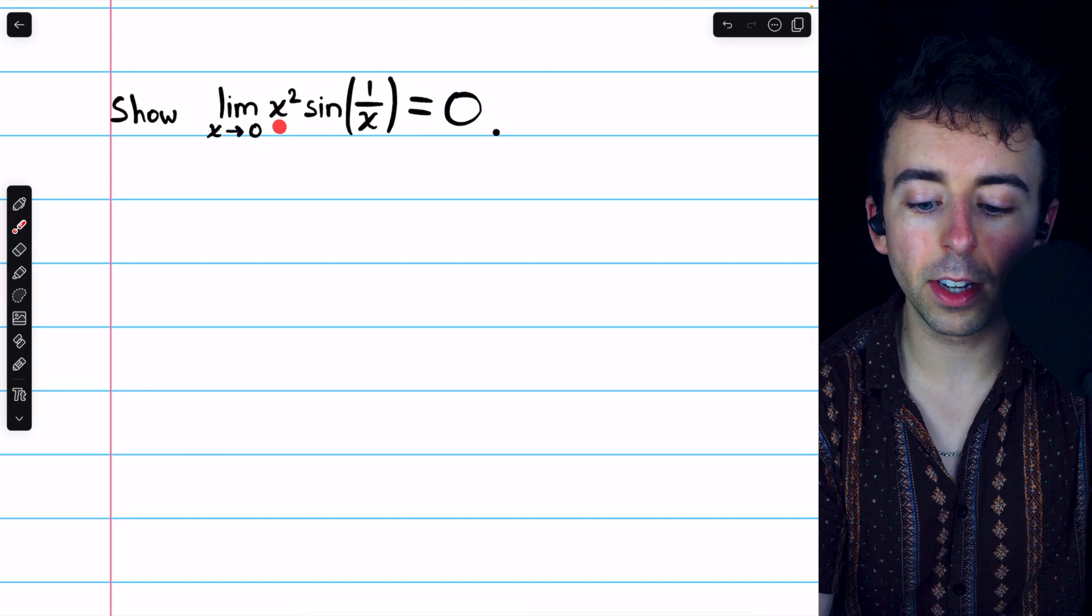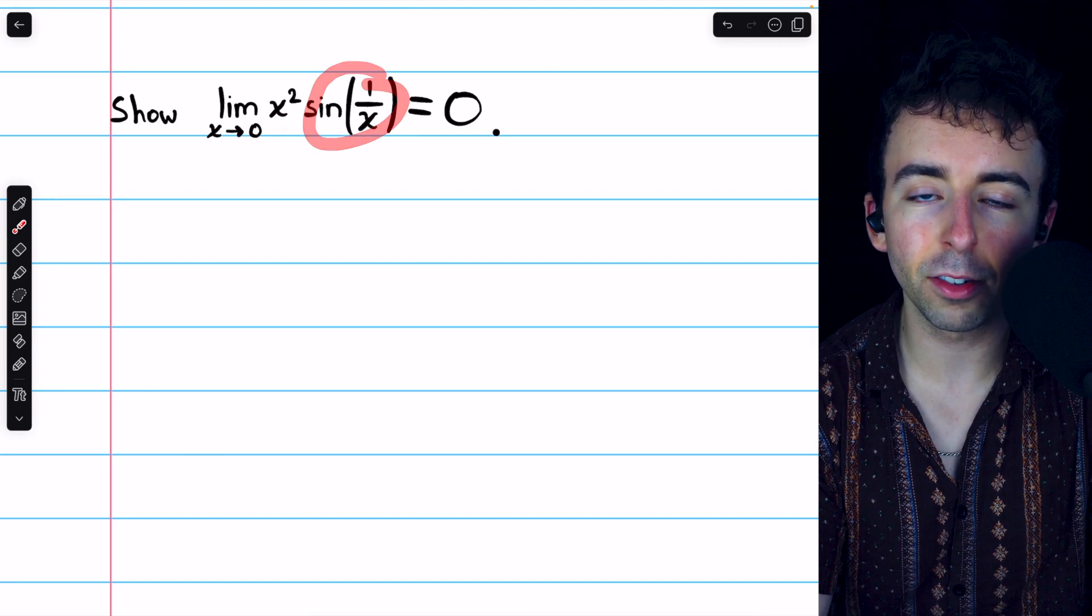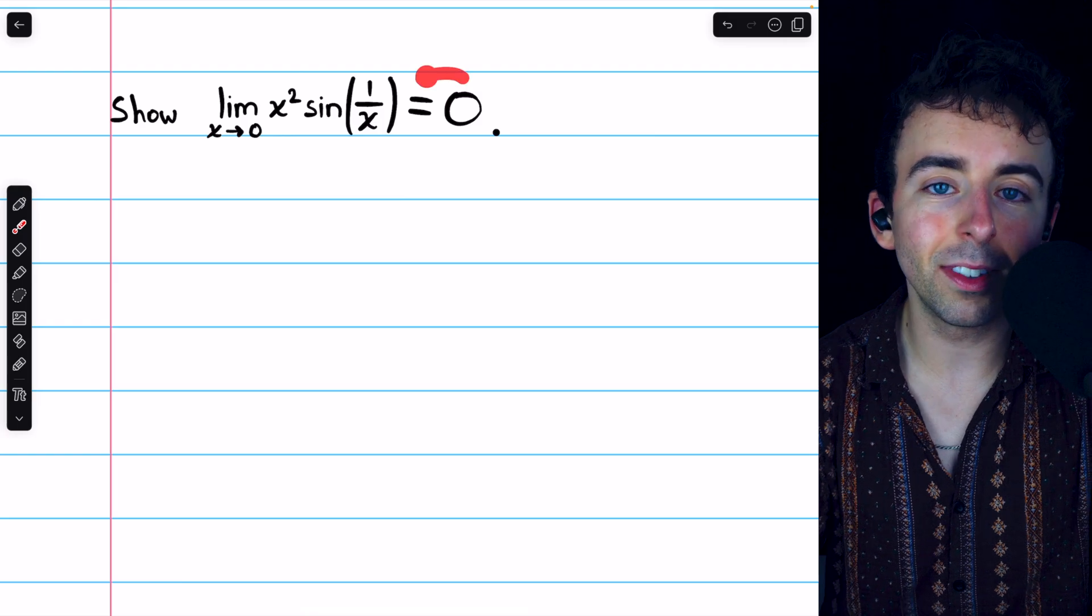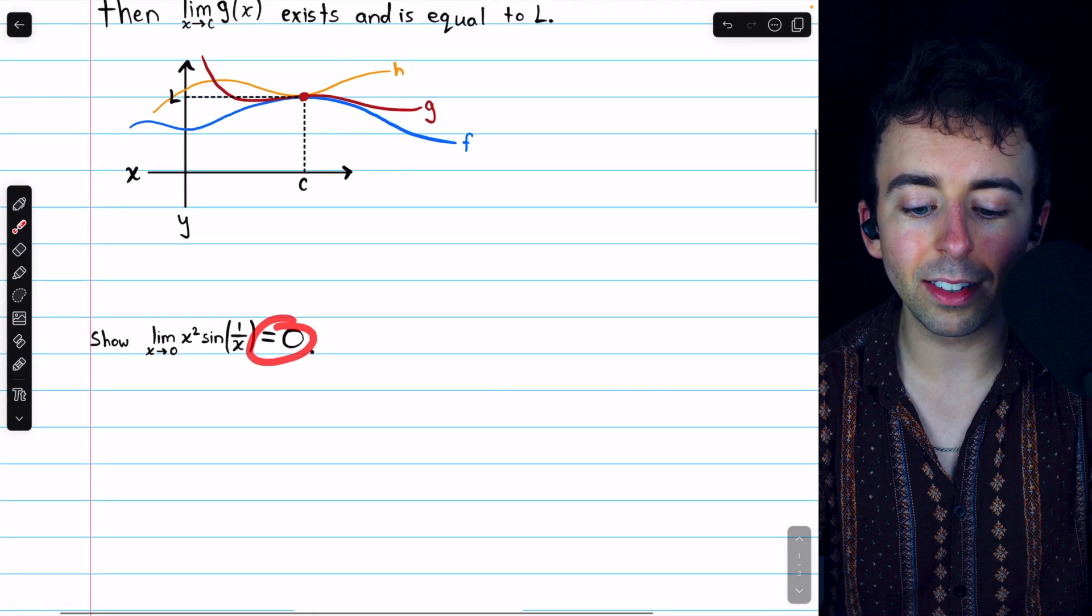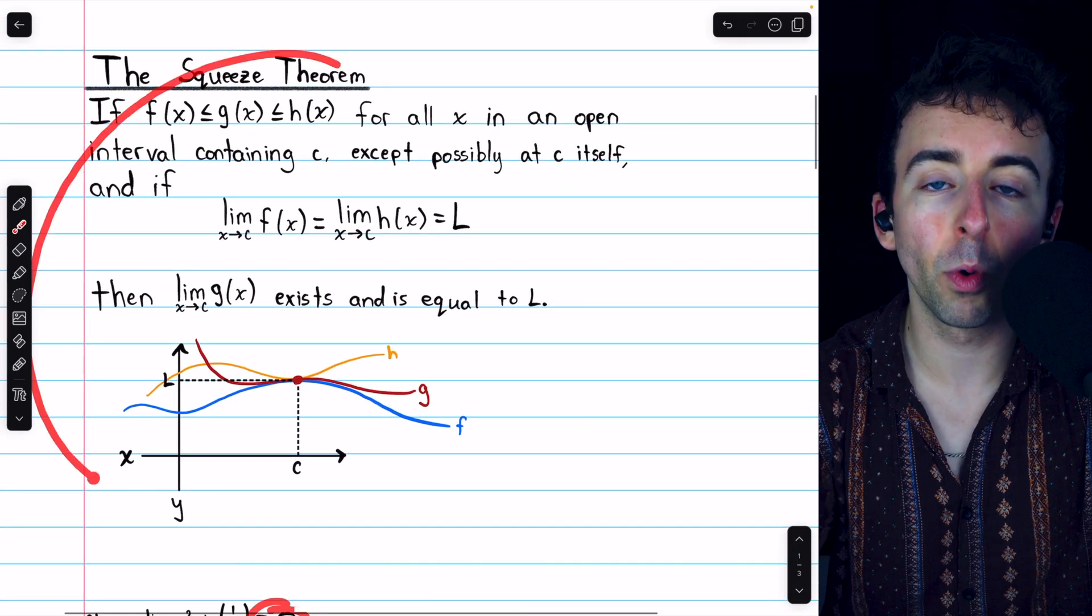To show that the limit of x squared times sine of 1 over x as x approaches 0 equals 0, we can use the squeeze theorem, which I've written here for your reference.